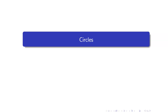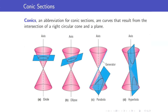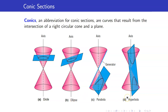We are now about to start our lesson on conic sections. The first conic section we will discuss are circles. Let us define what conic sections are — we abbreviate this as conics. They are curves that result from the intersection of a right circular cone and a plane. The intersection can form a circle, an ellipse, a parabola, or a hyperbola. We are going to formally define these three other curves later on.